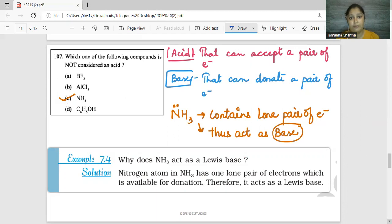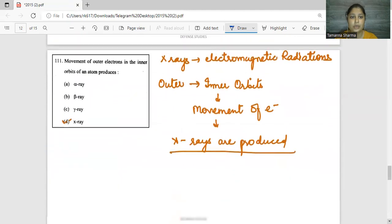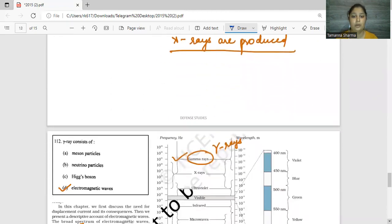I hope I am clear till now. In every video I am telling you, if you have any notes or questions, please feel free to ask us in the comment section or in our telegram channel. Next question: movement of outer electrons to the inner orbits of an atom produces X-rays. X-rays are electromagnetic radiations. When electrons go from outer to inner orbits, X-rays will be produced.